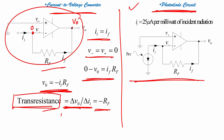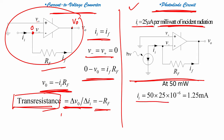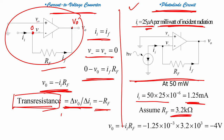Let us consider this photodiode circuit. If you are given a photodiode, I1 equals 25 microamperes per millivolt of incident radiation — that is the current the photodiode generates. At 50 millivolts, I1 equals 50 times 25 times 10 to the minus 6, which gives 1.25 milliamperes. Assuming Rf equals 3.2 kilo-ohms, the output voltage Vo equals minus 4 volts.